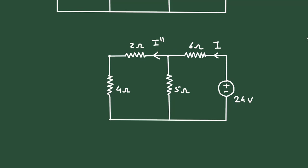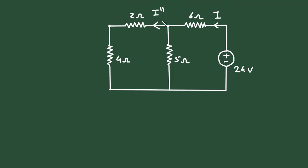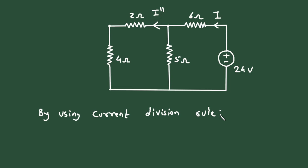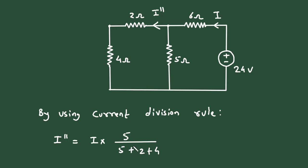So to find I double prime, first we need to find this current I. Here we can apply the current division rule. I double prime is equal to this current I multiplied by the opposite branch resistance, that is 5, divided by 5 plus 2 plus 4. So to find I double prime, we need to find the current I first.